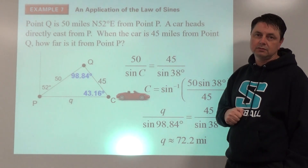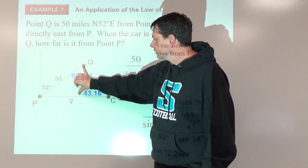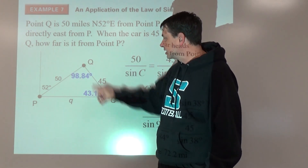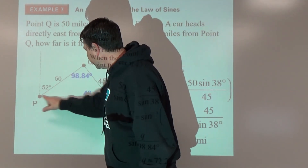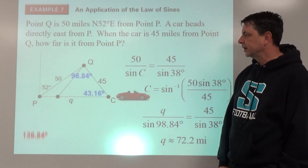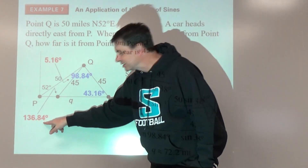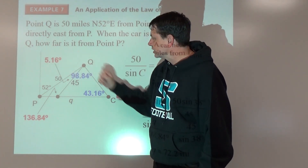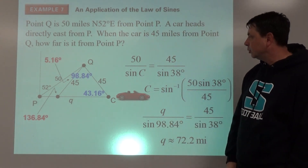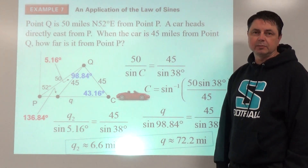But is that all — is this just a one-triangle case? Exploring the height shows 45 is not longer than 50, so it's probably a two-triangle case. We could swing the 45-mile side to make a second triangle. Angle C₂ is the supplement of 43.16°, giving 136.84° — wait, that makes the third angle 180 − 38 − 136.84 = 5.16°. Replacing 98.84° with 5.16°, set up the proportion again — the second solution gives about 6.6 miles.